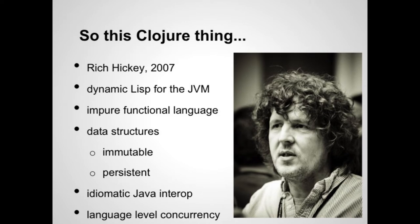Clojure is a language written by Rich Hickey in 2007. It's a dynamic lisp that sits on top of the JVM. It's a functional language, impure, so your functions can do IO if the type system doesn't constrain you. It ships with data structures that are both immutable and persistent. It has idiomatic Java interoperability, and it has language level concurrency built in from the very start. I'll talk about that later.